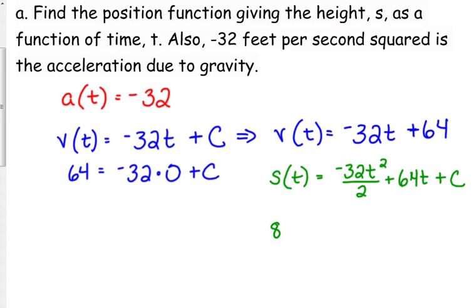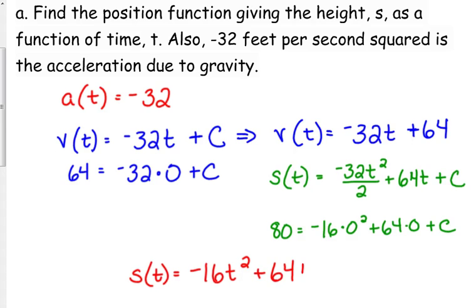So 80 equals negative 32 over 2 is negative 16 times zero squared plus 64 times zero plus C. Again, it's really easy when the time is zero because those variables factor out. So we end up finding out that our position function equals negative 16t squared plus 64t plus 80.